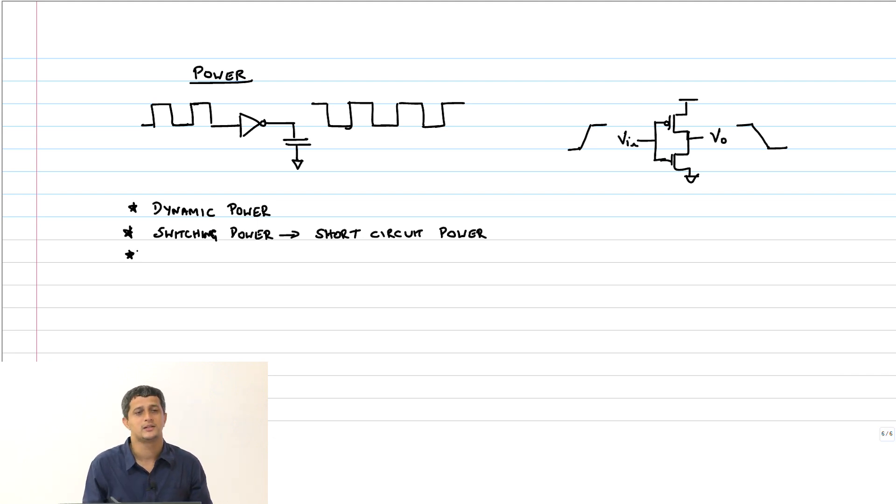The third one is the steady state power which ideally was supposed to be 0 because there was no leakage, but of course, we do now have a reasonable amount of leakage and therefore, we have leakage power as well. Both of these happen only during switching, but this happens in steady state.